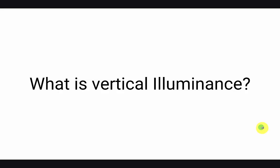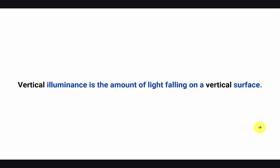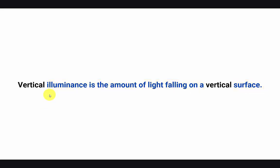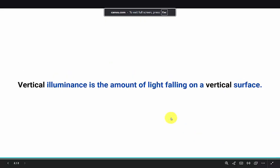Let's get started. What is vertical illuminance? Firstly, what is illuminance? Illuminance is the amount of light falling on a surface. Now, the definition remains the same, but since we are focusing on vertical illuminance, the surface where we are calculating our light levels is a vertical surface. Let me show you — this is horizontal and this is vertical.